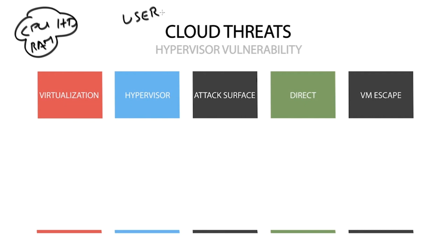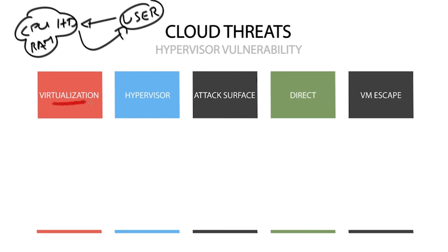Virtualization and orchestration are key components of the cloud. The virtualization side of things is carried out by what is known as the hypervisor, and it is this abstraction layer created by the hypervisor that allows the sharing of a system's physical resources.